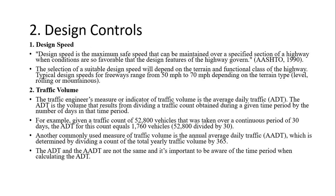The selection of the design speed depends on the terrain and functional classification of the highway. Typical design speeds range from 50 to 70 miles per hour depending upon the type of terrain — level, rolling, or mountainous.